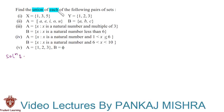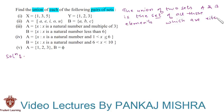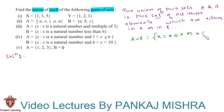Find the union of each of the following pairs of sets. We need to find their union. The union of two sets A and B is the set of all those elements which are either in A or in B. We can also write this as A union B is the set of X such that X belongs to A or X belongs to B. This definition simply means we need to club the elements of both the sets to get their union.